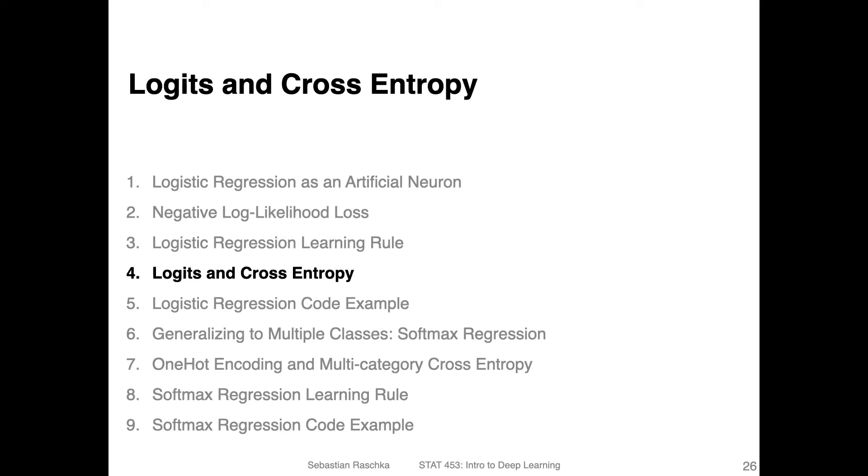Since we talked so much about logistic regression, I thought it might be a good opportunity to introduce two terms: logits and cross entropy, because I will use these quite often later in this class. These are very common terms in the deep learning literature—I sometimes refer to it as deep learning jargon—because we sometimes use these terms a little bit differently in statistics compared to deep learning. I just wanted to briefly clarify how they relate to the concepts we just discussed.